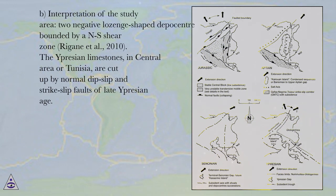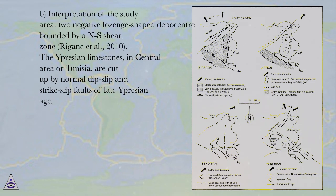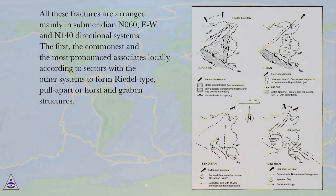Figure 6B: Interpretation of the study area showing two negative lozenge-shaped depot centers bounded by a NS shear zone — Riggan et al., 2010. The Uprisian limestones in Central Tunisia are cut up by normal dip-slip and strike-slip faults of late Uprisian age.